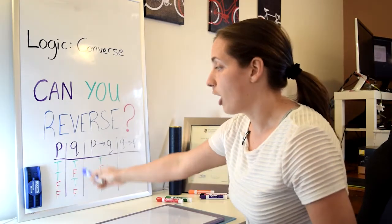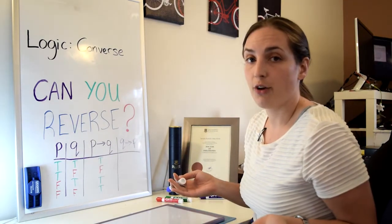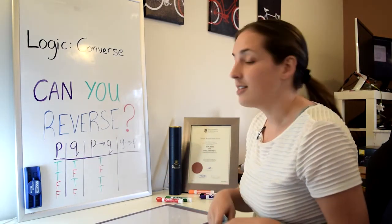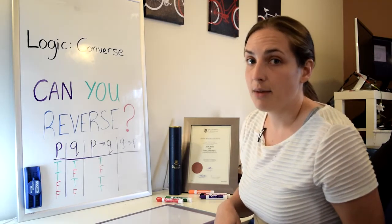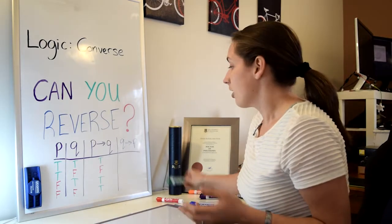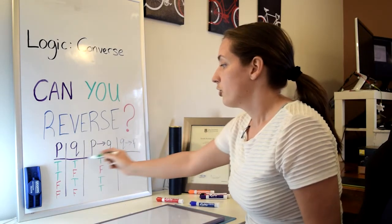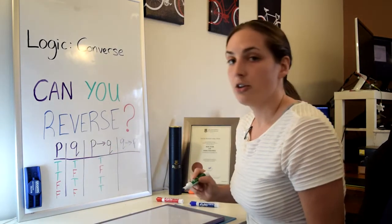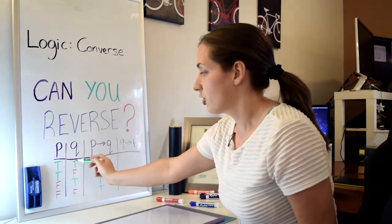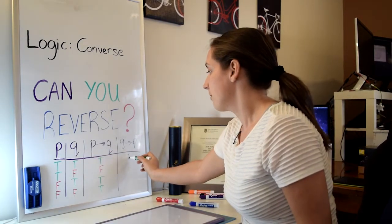Remember that there are four options for P and Q being true and false. If you think about it, this is just another if-then statement. So let's take a look. Any time that you have Q true and P true, here Q is true and P is true, so the statement is true.